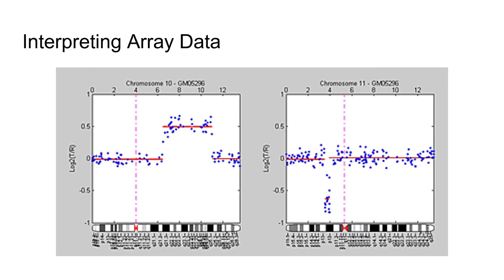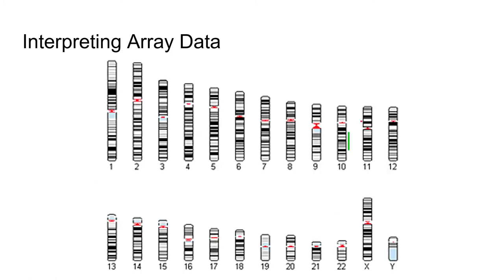We can also zoom in on each chromosome for a better look. The pink dotted line indicates the centromere. Chromosome 10, Q arm, shows a gain of genetic material, whereas chromosome 11 shows a loss of genetic material within the P arm. This can also be reported on a karyogram as bars adjacent to the chromosome — green for gain and red for loss.